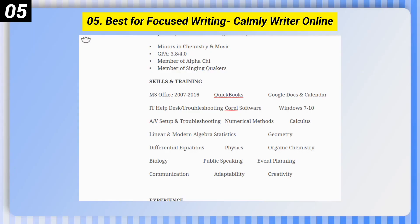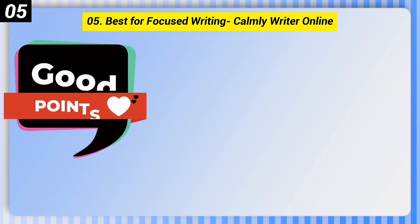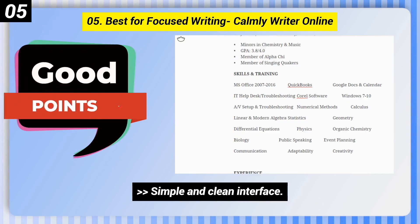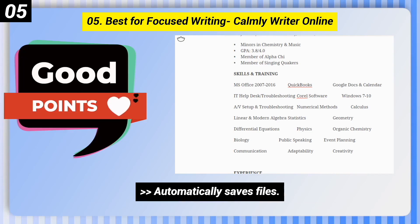Number 5, best for focused writing: Calmly Writer Online. Good points — it has a simple and clean interface, a focus mode that highlights what you're working on, and it automatically saves files.